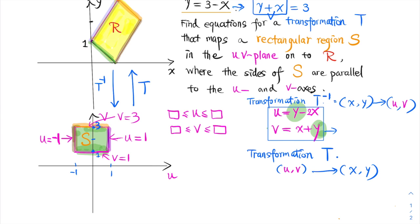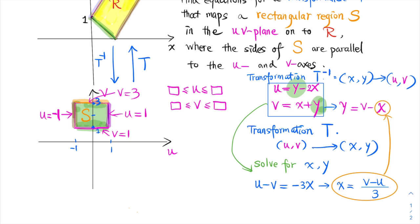we're going to get U minus V equals negative 2X minus X, which is negative 3X. If we divide both sides by negative 3, we get X is V minus U over 3.